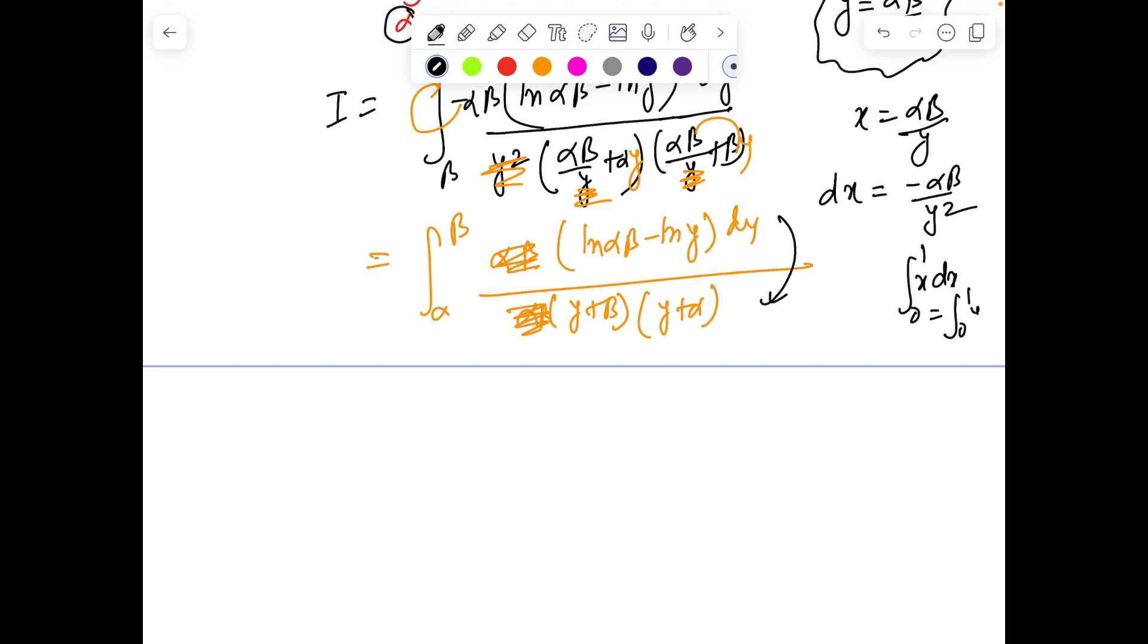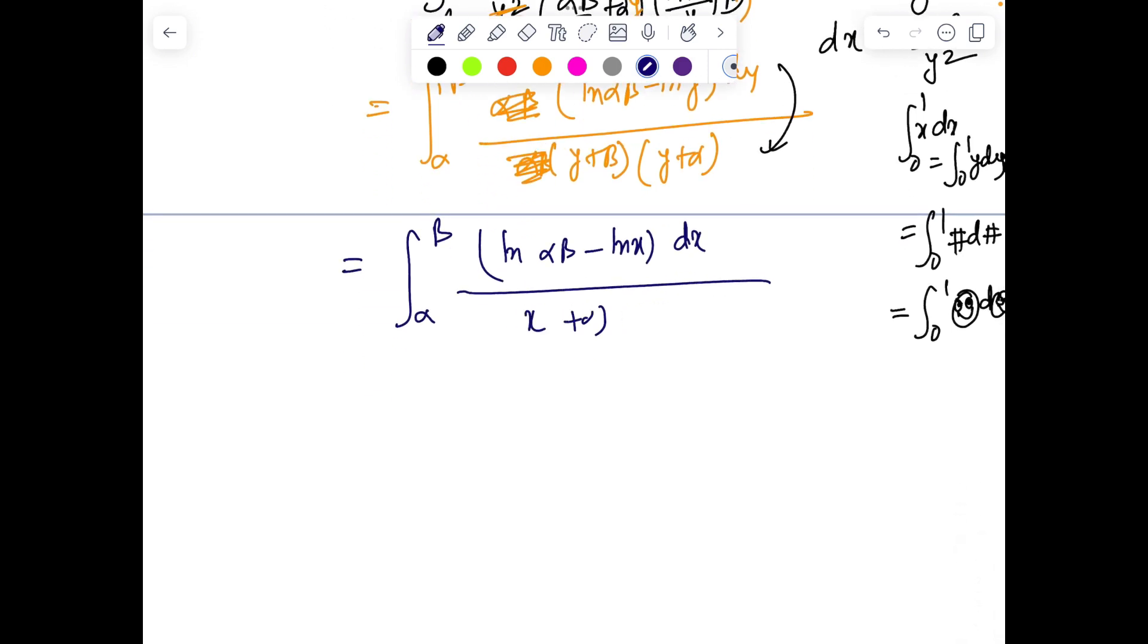Since y is a dummy variable, it doesn't matter whether you integrate x dx from 0 to 1 or y dy from 0 to 1. What matters is we are substituting the variable. Here we can write α to β integral of [ln(αβ) - ln x] dx over (x + α)(x + β).